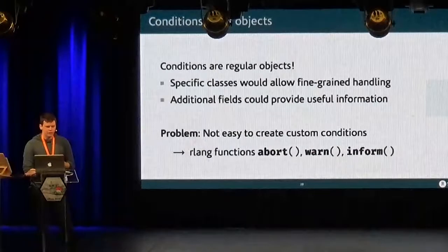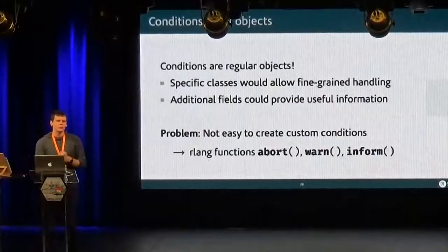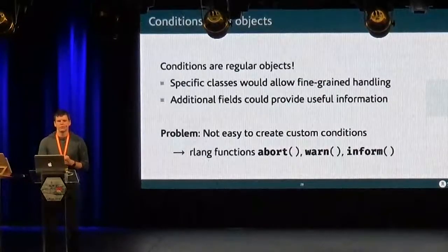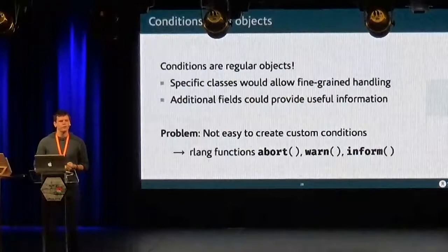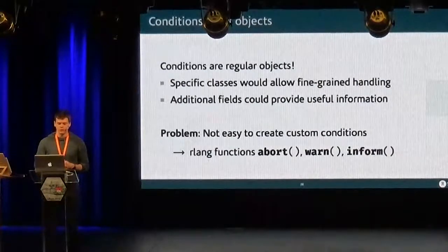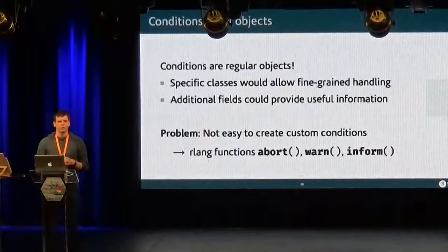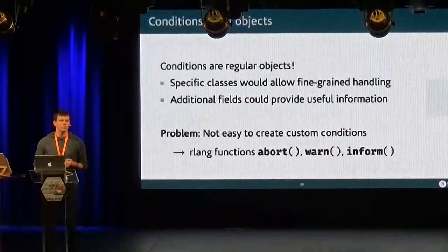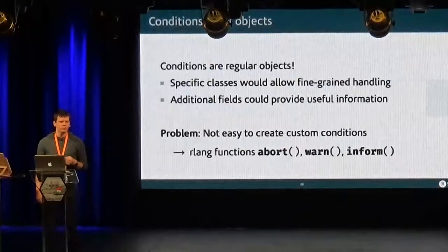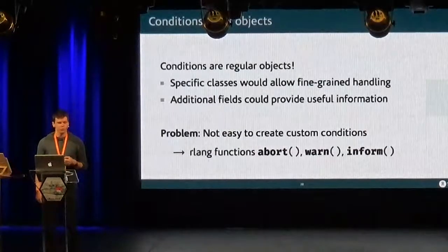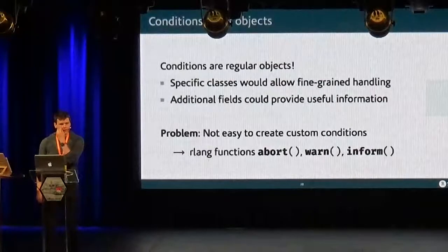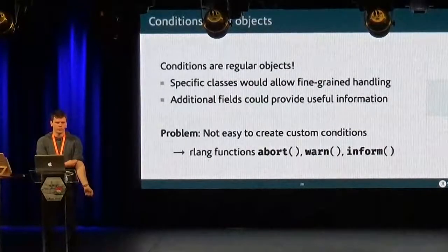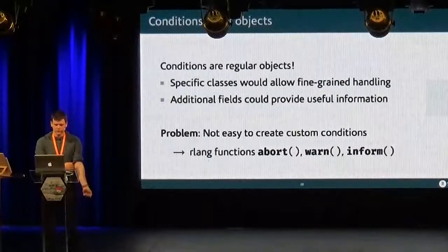So conditions are regular objects. And the main insight we get from this is that if we had more specific classes than errors, warnings and messages, we could improve things by allowing finer-grained handling. And also we could use additional fields, in addition to call and message, to provide more useful information.